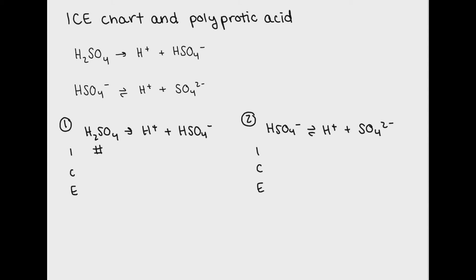First, we're going to take our amount of H2SO4 and dissociate it. There's likely no H plus or HSO4 minus already in solution. We add and subtract our X's and get an expression for our first Ka.